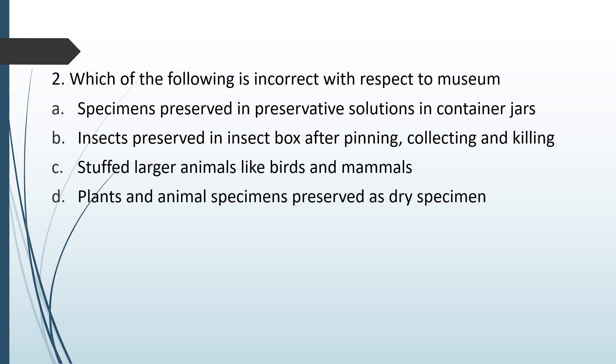Which of the following is incorrect with respect to a museum? A: Specimens preserved in preservative solutions in container jars. B: Insects preserved in insect box after pinning, collecting and killing. C: Stuffed larger animals like birds and mammals. D: Plants and animals specimens preserved as dry specimens. The incorrect statement is statement B.